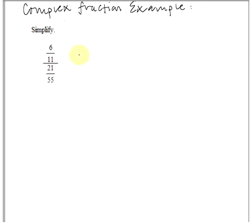So in looking at this example we have 6 elevenths and then a fraction bar and then in the denominator we have 21 over 55. So we have a fraction and then within the fraction the numerator and denominator are also fractions. This is what we mean when we talk about a complex fraction.